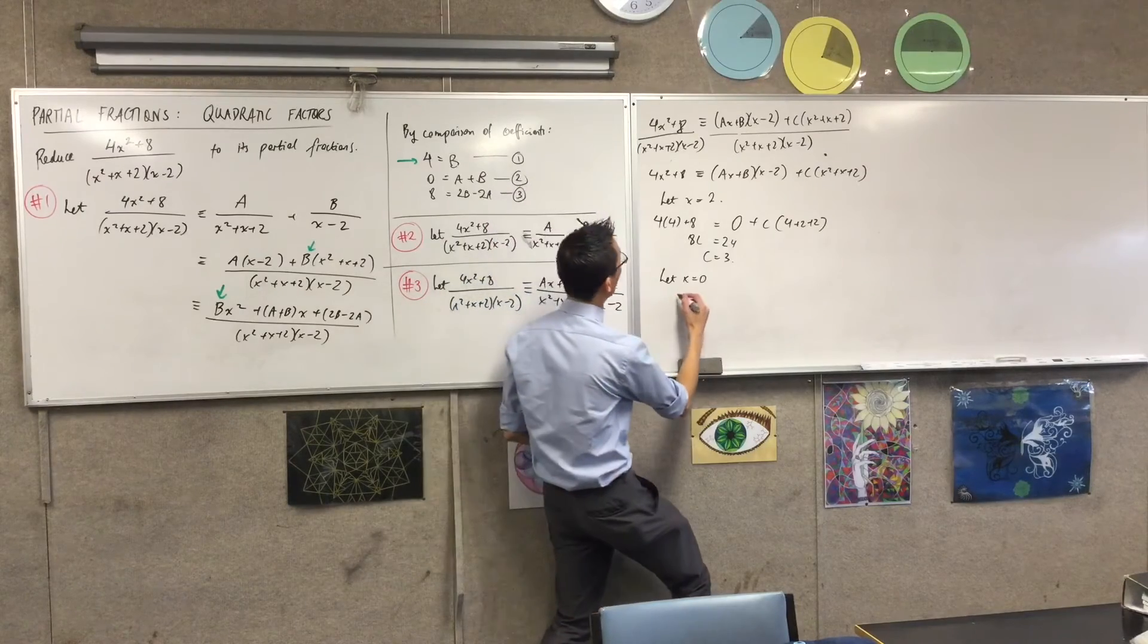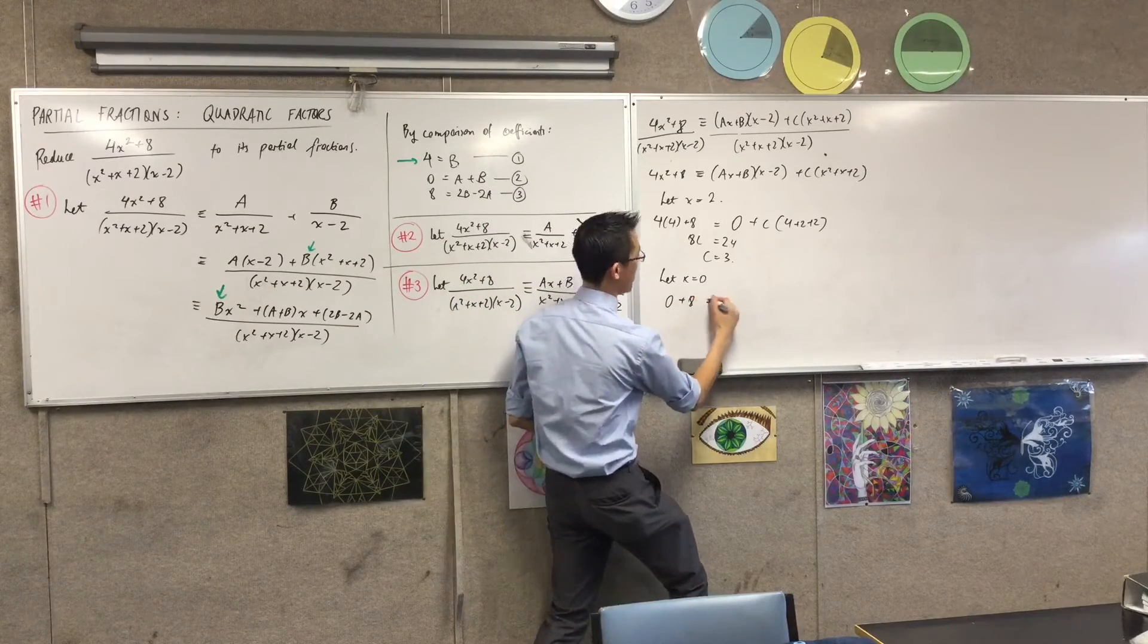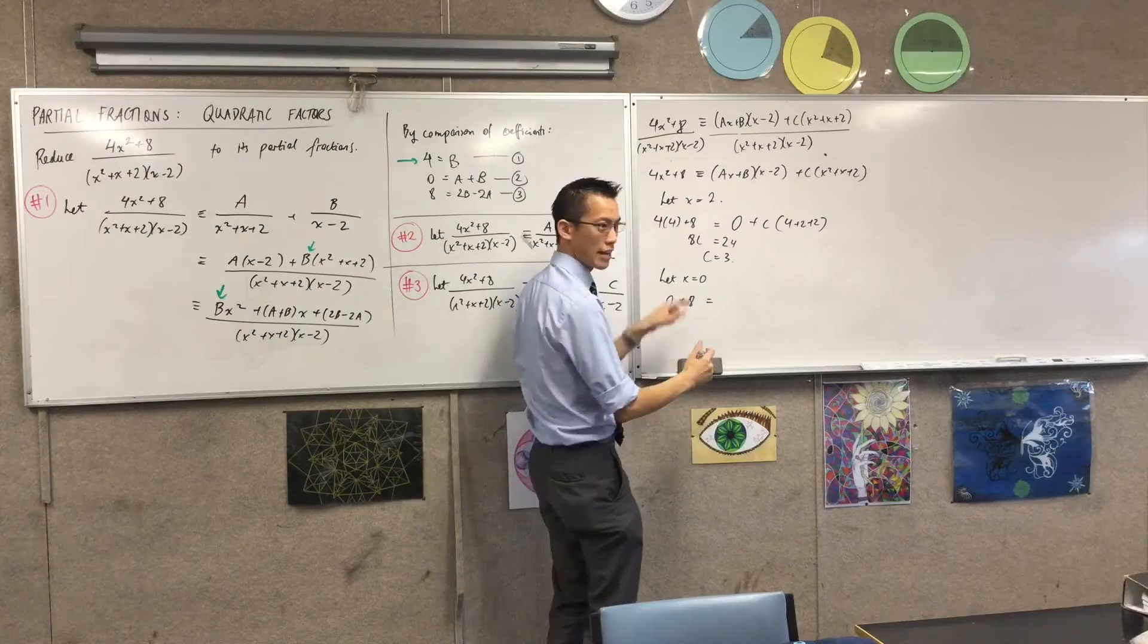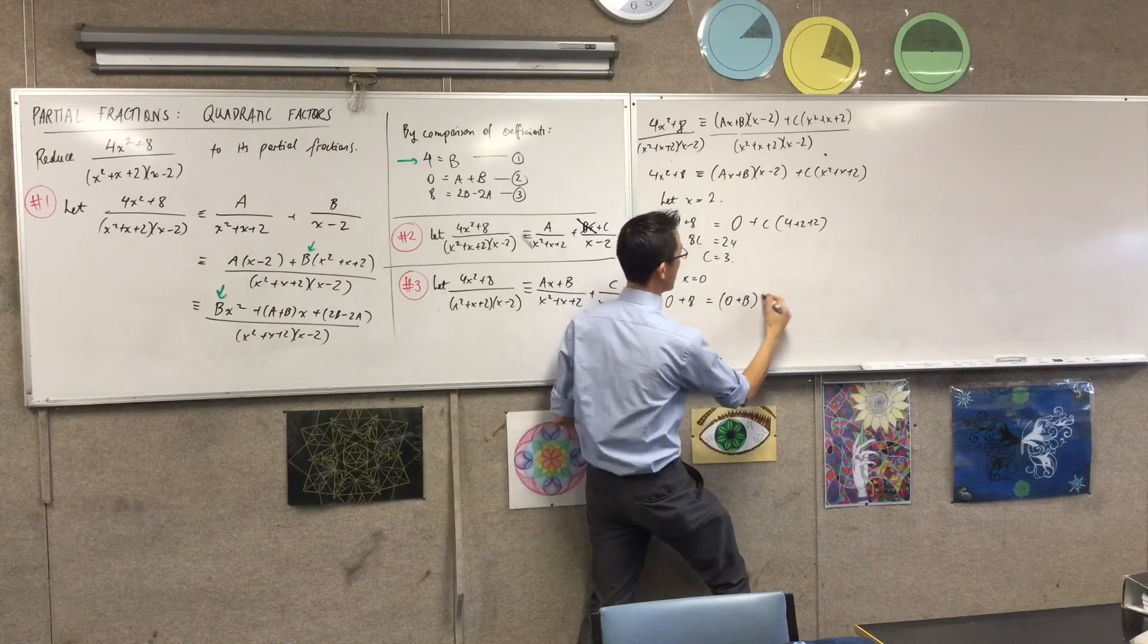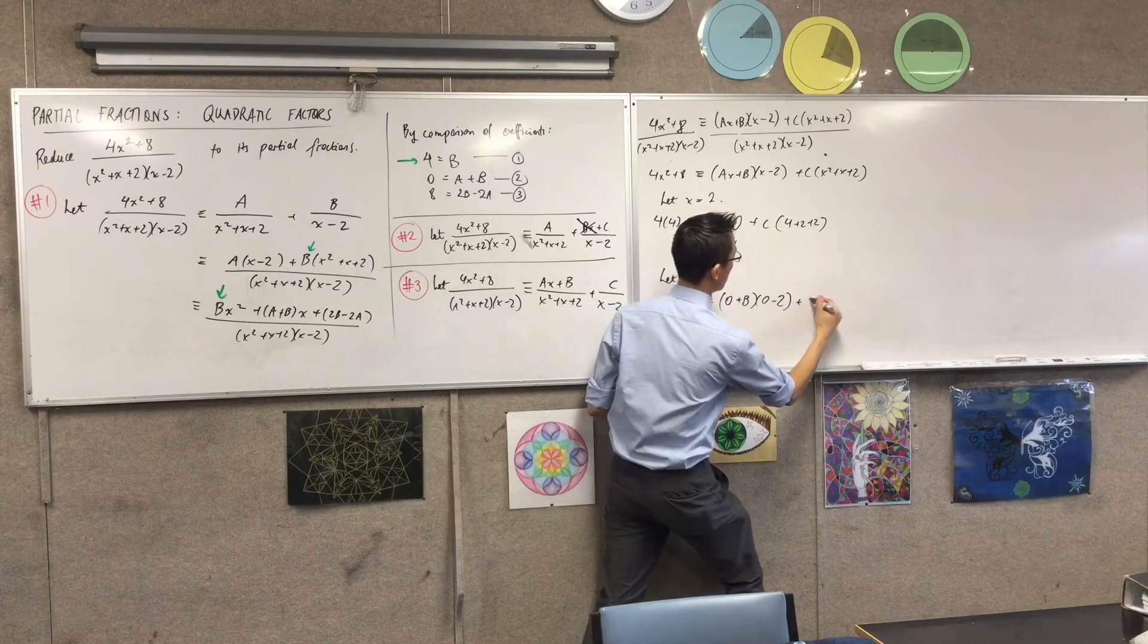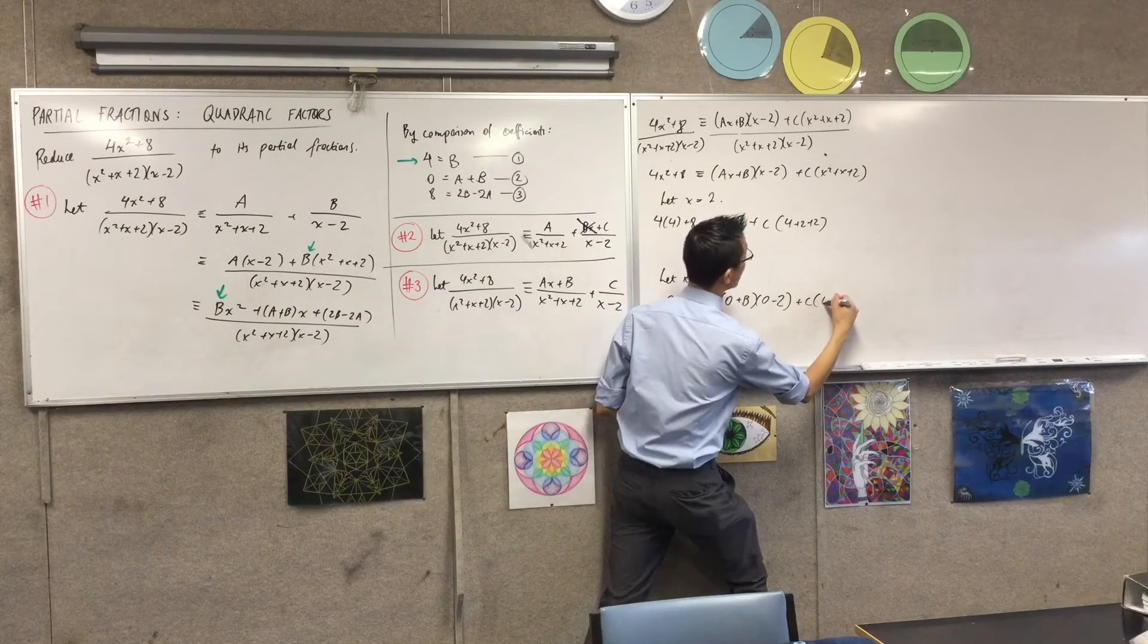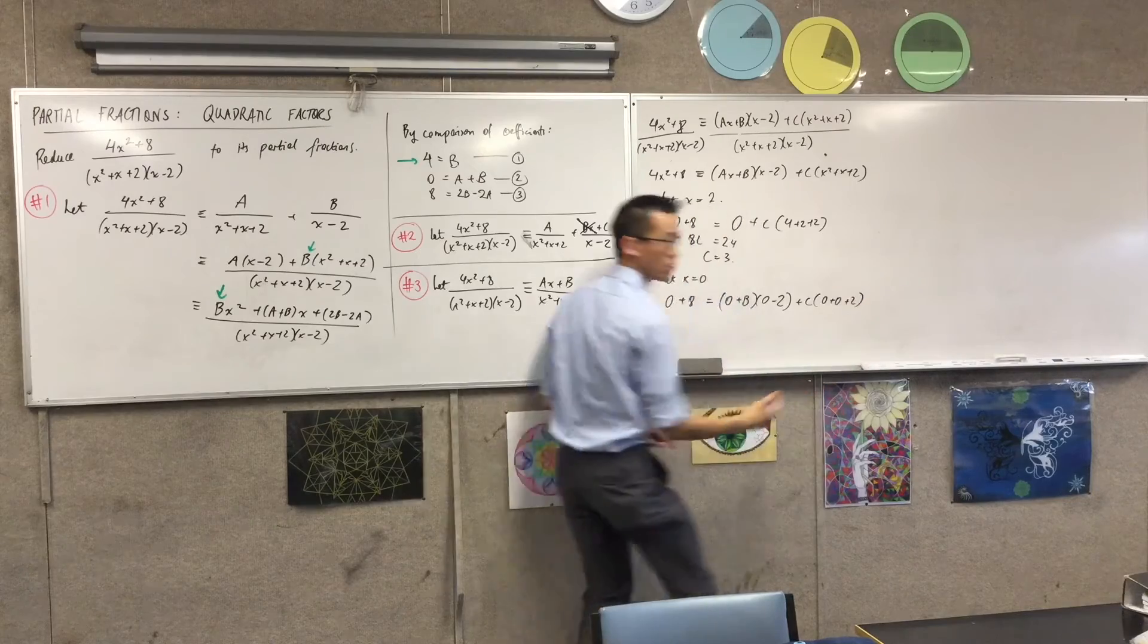On the left-hand side, I'm going to get 0 plus 8 is equal to, okay, watch out here. Do your substitution carefully. I'm not going to skip anything here because I trust myself. 0 plus b, 0 minus 2, c, 0, 0, 2. Are you happy with that?